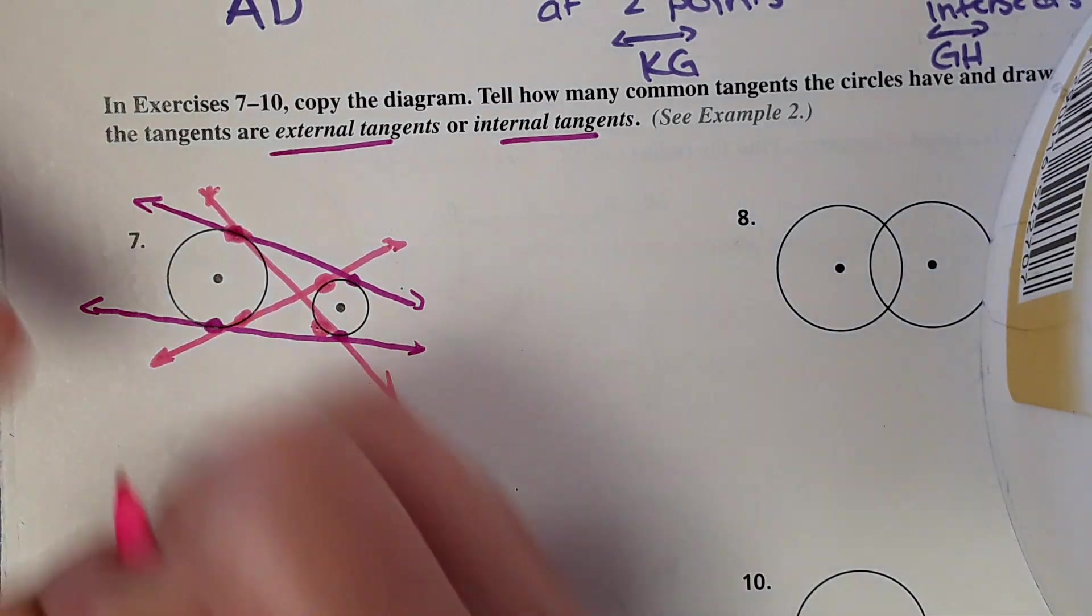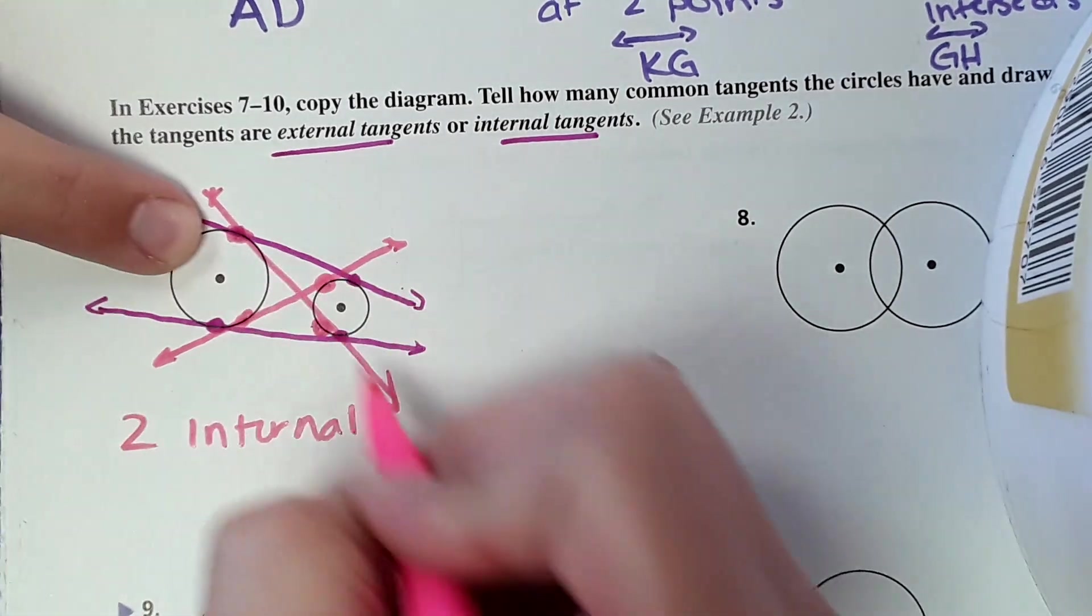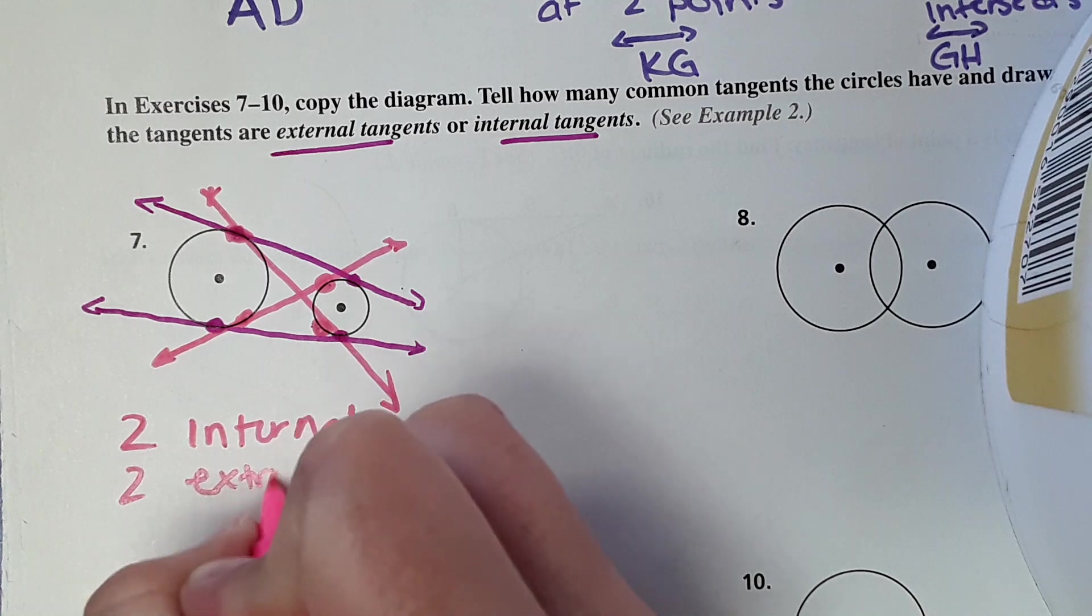So for this, there are two internal. So the internal ones are the ones that cross in the middle right there. And two external tangent lines.